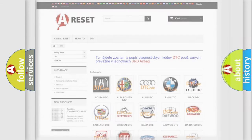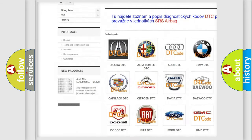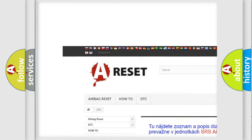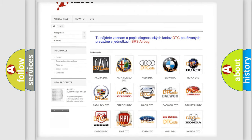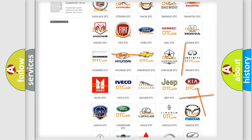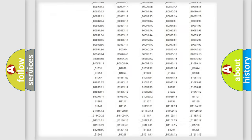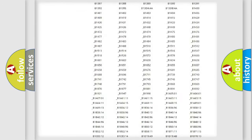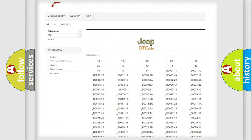Our website airbagreset.sk produces useful videos for you. You do not have to go through the OBD-II protocol anymore to know how to troubleshoot any car breakdown. You will find all the diagnostic codes that can be diagnosed in Jeep vehicles.